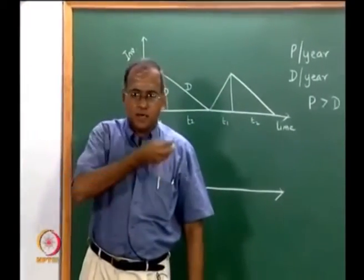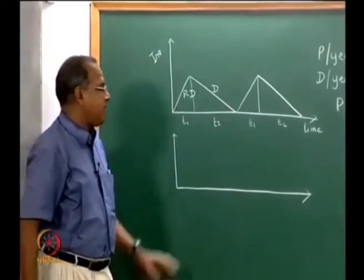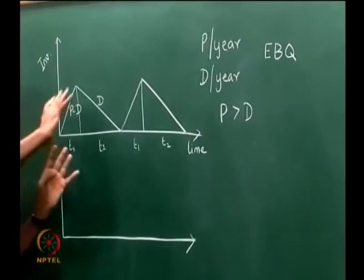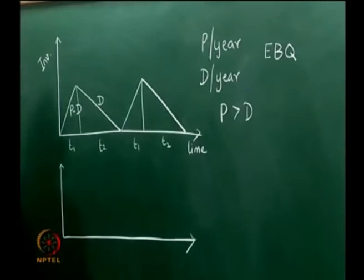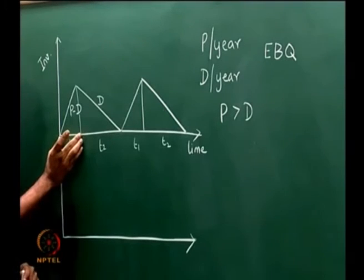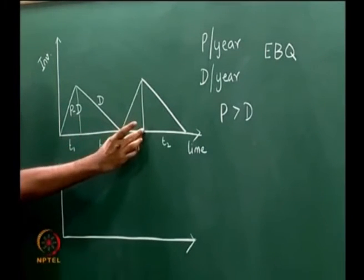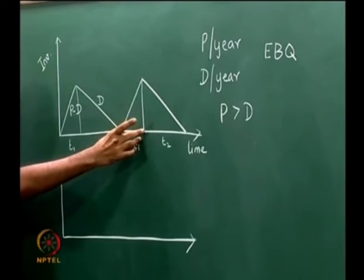We also said that there is a setup cost that is involved every time we start producing it, because if we draw a similar figure for the facility that is producing, then the facility is busy making this item up to period t1. Then the facility again starts making this item once again at this point and is busy for a period t1.